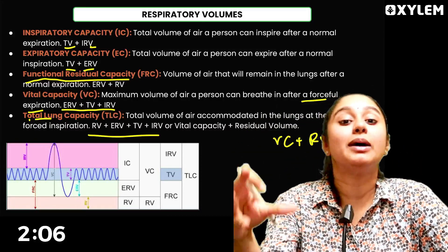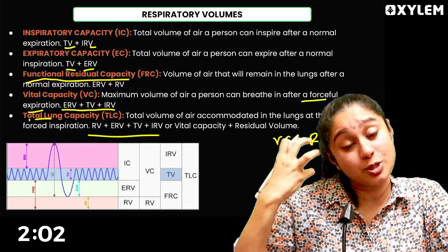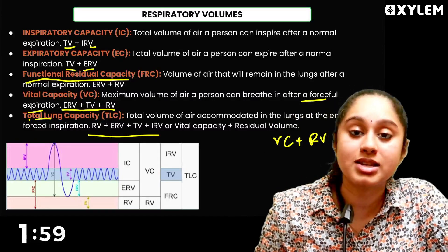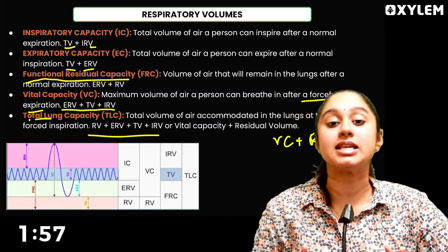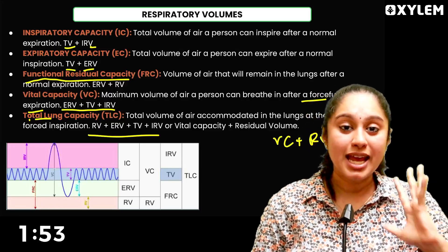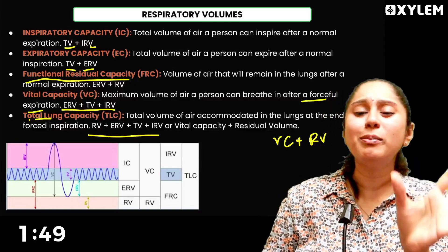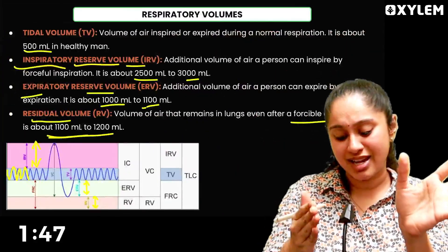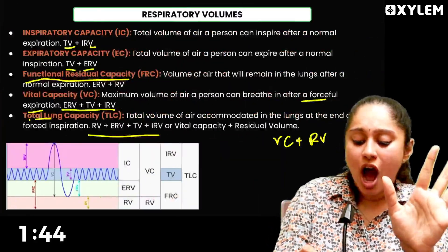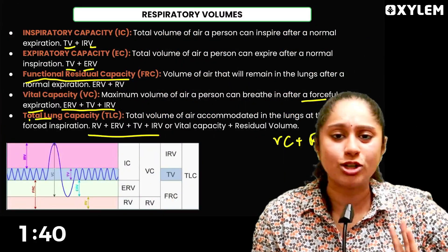Total lung capacity is IRV plus TV plus ERV plus residual volume — that is the complete total. Or we can say: vital capacity plus residual volume. Since ERV, TV, and IRV together are nothing but vital capacity, the total lung capacity equals vital capacity plus residual volume. If you look at the numbers, you can calculate your own values from these formulas.